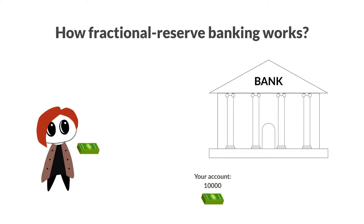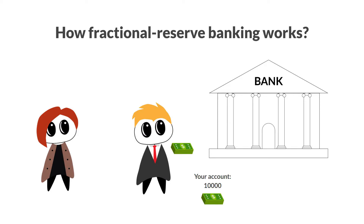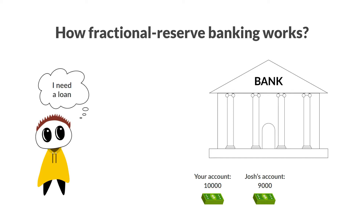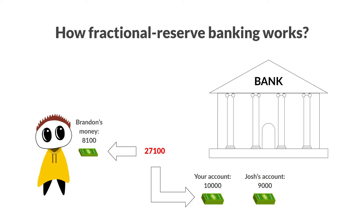Mia spends the 9k buying a fancy vacation from Josh, who owns a travel agency, and he decides to deposit the whole 9k into a bank. Josh's 9k deposit is a new liability and asset at the same time for the bank — the bank owes Josh 9k, so it's a liability, but they only have to keep 10% in reserves and are allowed to use the remaining $8,100 as an asset. Brandon then walked in asking for an $8,100 loan, and he got it. Bear in mind that you still have your 10k, Josh still has his 9k, and Brandon has $8,100 in his hands, so there is $27,100 in the system — all legit currency despite the fact that most of it is created out of thin air.